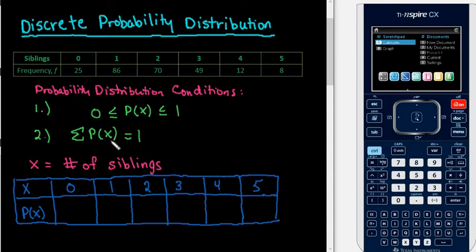And the sum of all of our probabilities does have to equal 1. So what we are going to do is we are going to create a probability distribution for the discrete random variable number of siblings. In this case, some people were polled and they recorded how many siblings they had. The number of siblings ranged from 0 to 5 and the frequency is listed.